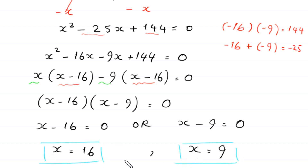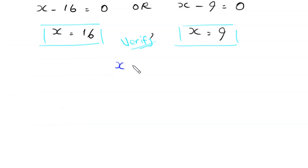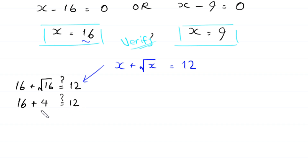Let's verify and see which of them are solutions and which are not. The original equation is x plus root x equals 12. When x equals 16, this equation becomes 16 plus root 16 equals 16 plus 4, which is 20. That is not equal to 12, so x equals 16 is not a solution and will be rejected.